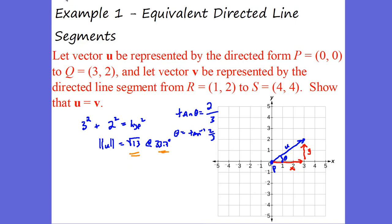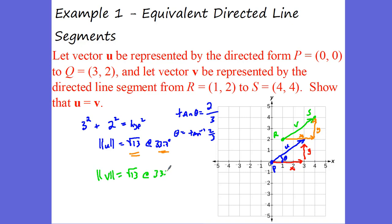We also have another line segment. This one starts at R(1, 2) and goes to S(4, 4). That's Vector V. Take a look at this vector — it's made up of an X component and a Y component. The X component is 3 and the Y component is 2, which gives Vector V a magnitude of root 13 as well. Arc tangent of 2 over 3 is 33.7 degrees, which means these are parallel and equivalent vectors — they have the same magnitude and the same direction.